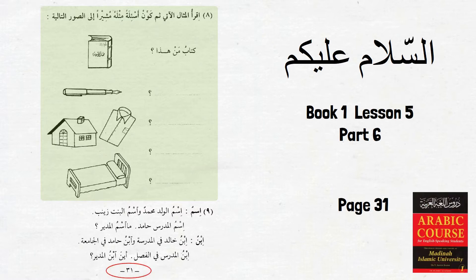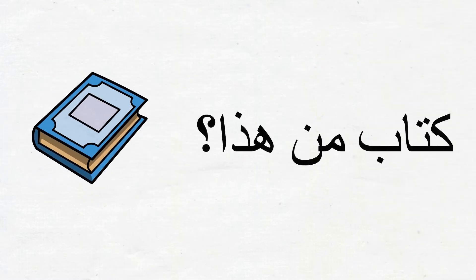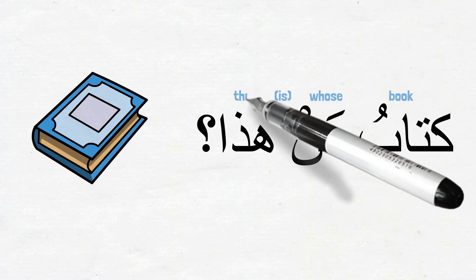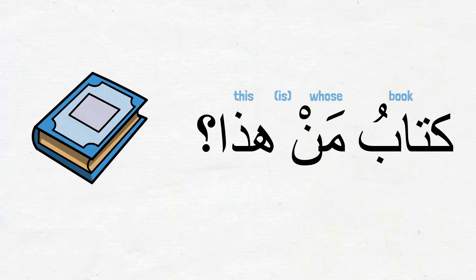In this exercise, we are given the following example question: كِتَابُ مَنْ هَذَا — Whose book is this? Here, كِتَابُ is مُضَاف and مَنْ is مُضَاف إِلَيْهِ. Therefore, مَنْ is coming in place of a مَجْرُور اسم. But because مَنْ is مَبْنِي, we do not see the apparent sign of its being مَجْرُور.